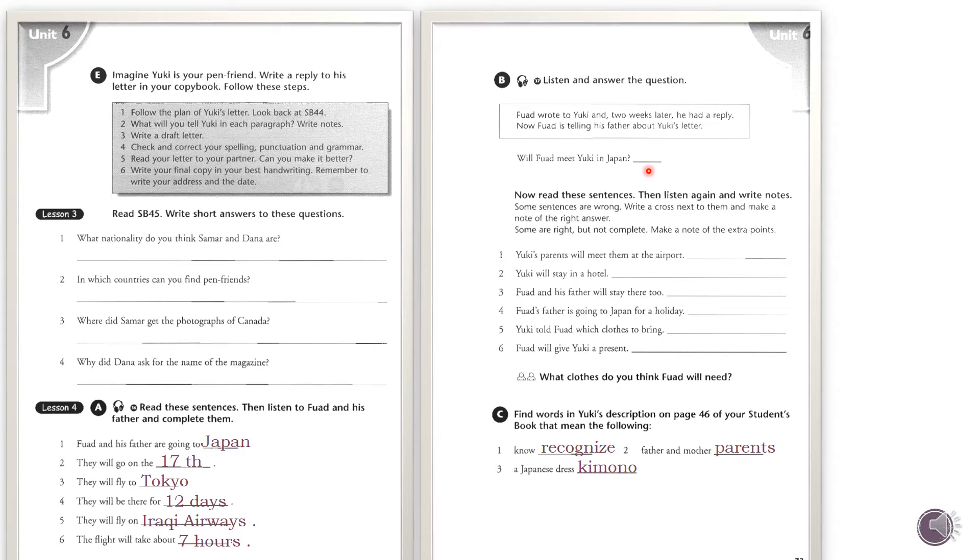I didn't ask Yuki what I'll need. What do you think, Dad? I don't know. Find out what the weather will be like. And ask Yuki what you will be doing, where you'll be going. Just don't take too much. You'll have to carry your own bag. Okay, Dad. Oh, just one thing. I want to take Yuki a present. What should I get him? You said he collects stamps. Why not take him some Iraqi stamps? Good idea, Dad. Thanks. I'll do that.